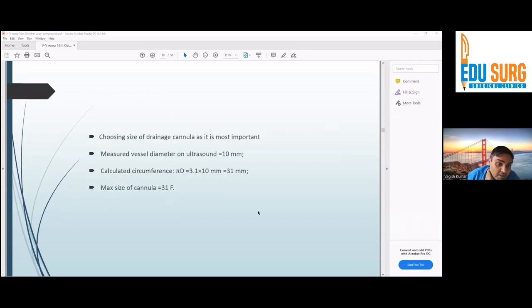Choosing the size of drainage cannula is also very important because if you are putting a small size cannula, you'll not get good blood flow and your patient will not benefit. This is just a crude method. You measure the vessel diameter on ultrasound. It should be 10 millimeters. Then you can calculate with the help of this circumference. Maximum size of cannula is 31 French. Normally in 60-70 kilogram patients, our drainage cannula used to be like 25, mostly 25. And return cannula size doesn't matter. It can be of any size.